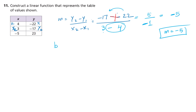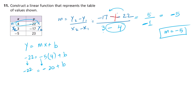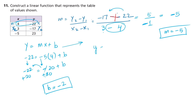Now find b. Write y equals mx plus b and take an easy point — let's use (4, -22). Replace y with negative 22, m with negative 5, and x with 4, plus b. Negative 5 times 4 is negative 20, plus b. Write negative 22 equals negative 20 plus b. Bring negative 20 to the other side: add plus 20 to both sides. This cancels, so b equals negative 22 plus 20, giving negative 2. Write the equation: y equals negative 5x minus 2. That is your final answer.